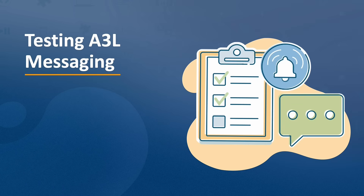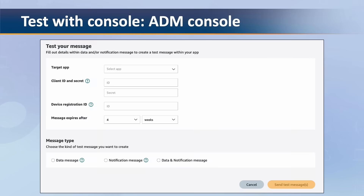Now that you've implemented and integrated the SDK, you're probably wondering how you can test your app. You can do so in one of three ways. The first one is by sending a test message through the console. FCM and ADM both have consoles that you can use to send a push notification.